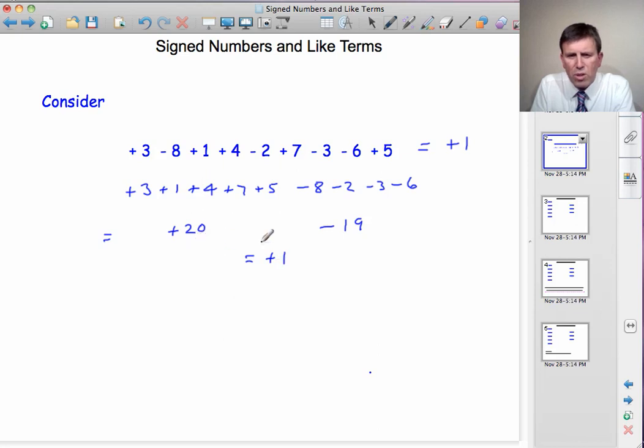So here, when we've got some positives and some negatives, it's the one that we've got the most of that determines the sign. But it's a subtraction that's taken place. You've taken away 19 from 20 to see how many positives we have.